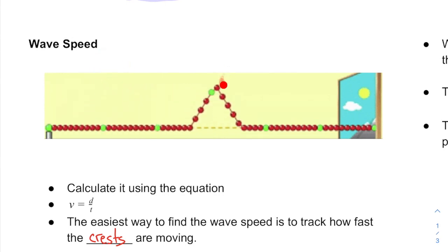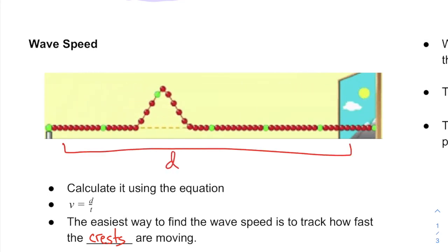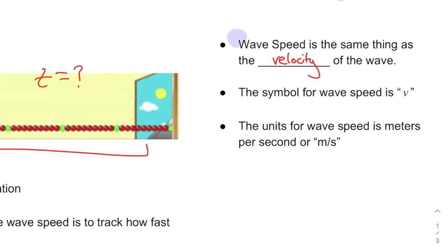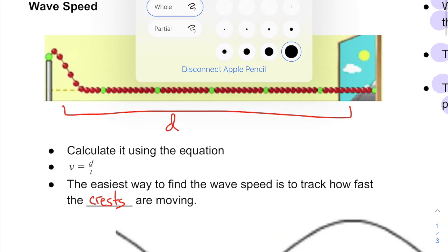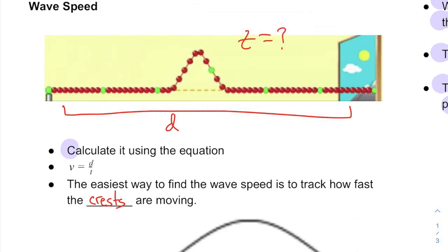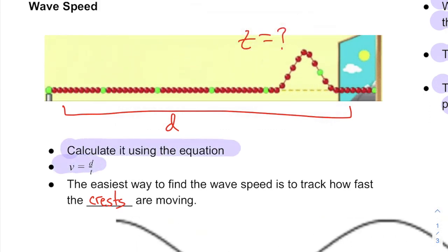So if you want to find how fast this object is moving, if you want to find its velocity, then you've got to know how far it's going, its distance, and you've got to know in how much time it's taking to get there. So wave speed, same thing as the velocity. Symbol for wave speed is V for velocity, and the units for wave speed is meters per second, M over S. And you calculate it using the equation that you guys know, V equals D over T, distance divided by time.